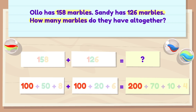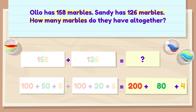Almost there. Let's look at our final number. I see two sets of tens that can be added together. 70 plus 10 equals 80. The sum is 200 plus 80 plus 4, which is 284.